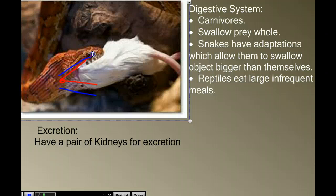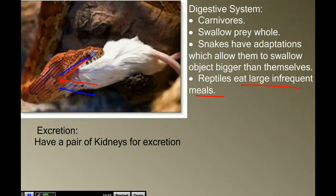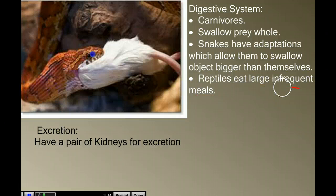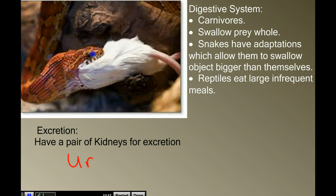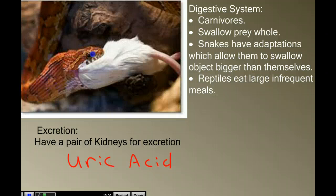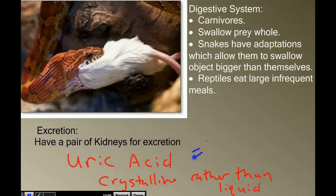Reptiles typically eat large, infrequent meals — what we call bulk feeding. Some of the more active lizards eat smaller meals more frequently, but large snakes like anacondas will eat an extremely large meal and then basically lay there for the next week digesting. That's due to their very slow metabolism and low metabolic needs. Reptiles have a pair of kidneys for excretion. Most metabolic waste is released as uric acid, which doesn't have as much water in it as urine — it's more of a crystalline structure, and that's an adaptation for water conservation on land.